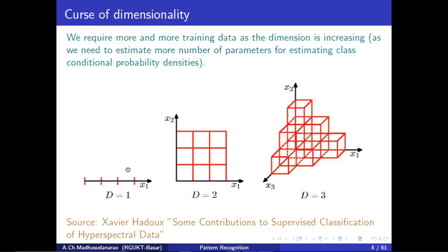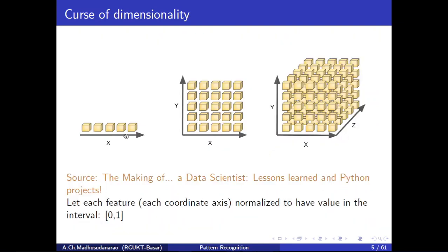If we use 5 partitions instead of 3, for d=1 we need 5 parameters; for d=2 we need 5×5=25 parameters; for d=3 we need 5×5×5=125 parameters. As the number of parameters keeps increasing, we require a huge amount of training data to estimate the concerned distributions.